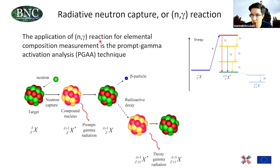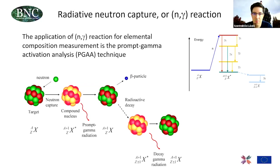The N-gamma reaction can be sketched as follows: we have a target nucleus in our sample and we bombard it with neutrons. Some neutrons will be captured and the binding energy of the neutron creates an excited state of the nucleus called the compound nucleus. The excess energy of this compound nucleus is emitted most typically as gamma radiation, and a product nucleus is formed. This can be either stable or radioactive — if radioactive, we get another kind of gamma radiation called decay or delayed gamma radiation, characterized by its half-life.